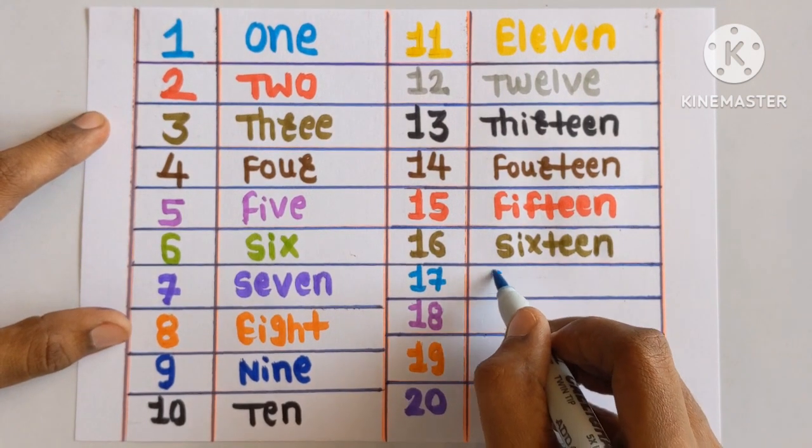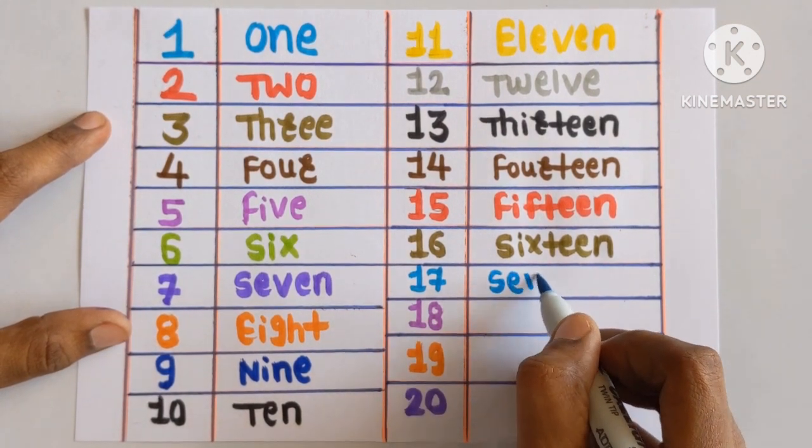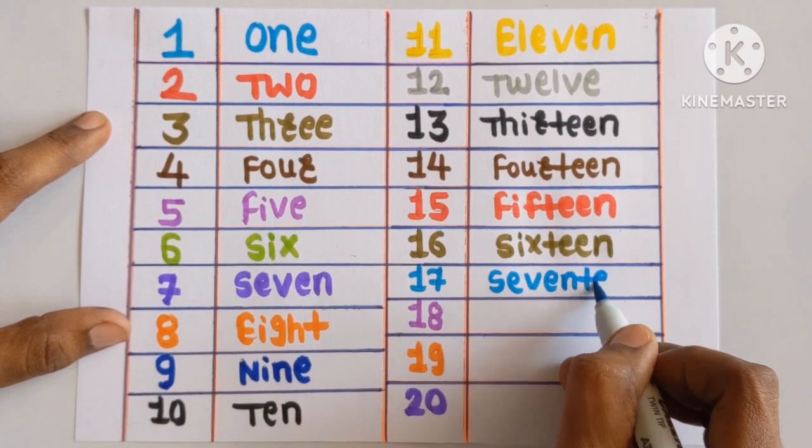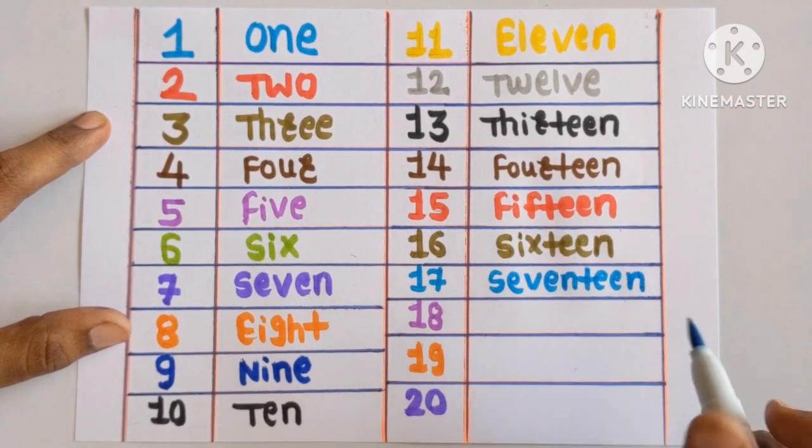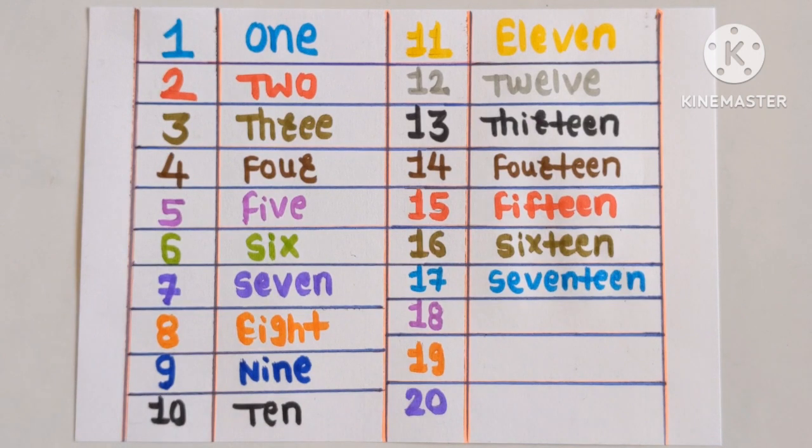Number 17: S-E-V-E-N-T-E-E-N. Seventeen. Sky blue color.